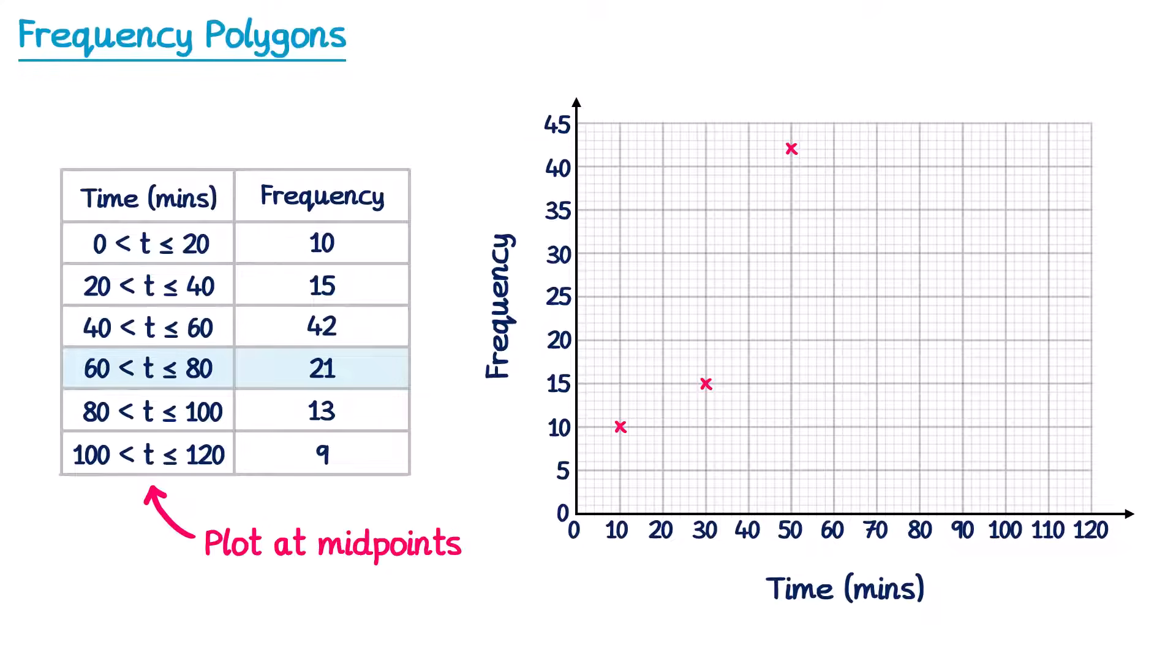For the next one, from 60 to 80, the midpoint is 70, and the frequency is 21, so we plot across here. For the next one, from 80 to 100, the midpoint is 90, and the frequency is 13. So we plot across at 90, 13.